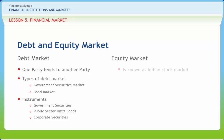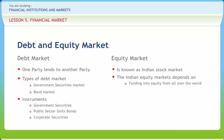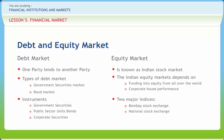The Indian equity market is more popularly known as the Indian stock market, and has become the third biggest after China and Hong Kong in the Asian region. A stock exchange has been defined by the Securities Contract Regulation Act 1956 as an organization, association or body of individuals established for regulating and controlling of securities. The Indian equity market depends on funding into equity from all over the world and corporate houses' performance. The stock market in India deals with two types of funds — private equity fund and venture capital fund — and transactions based on two major indices: Bombay Stock Exchange and National Stock Exchange of India Limited.